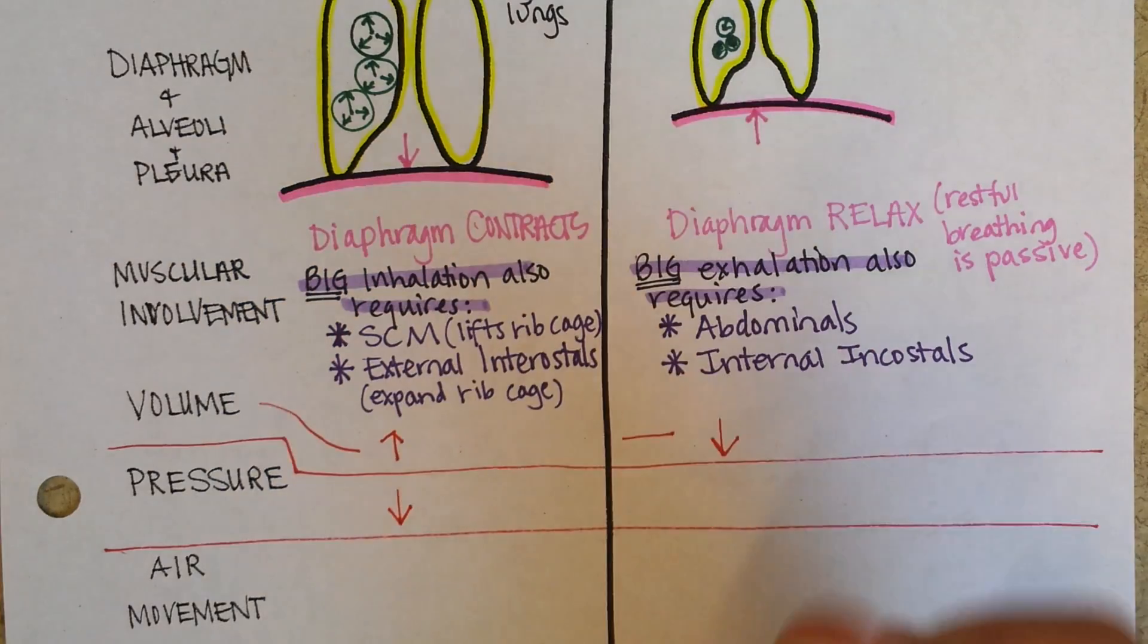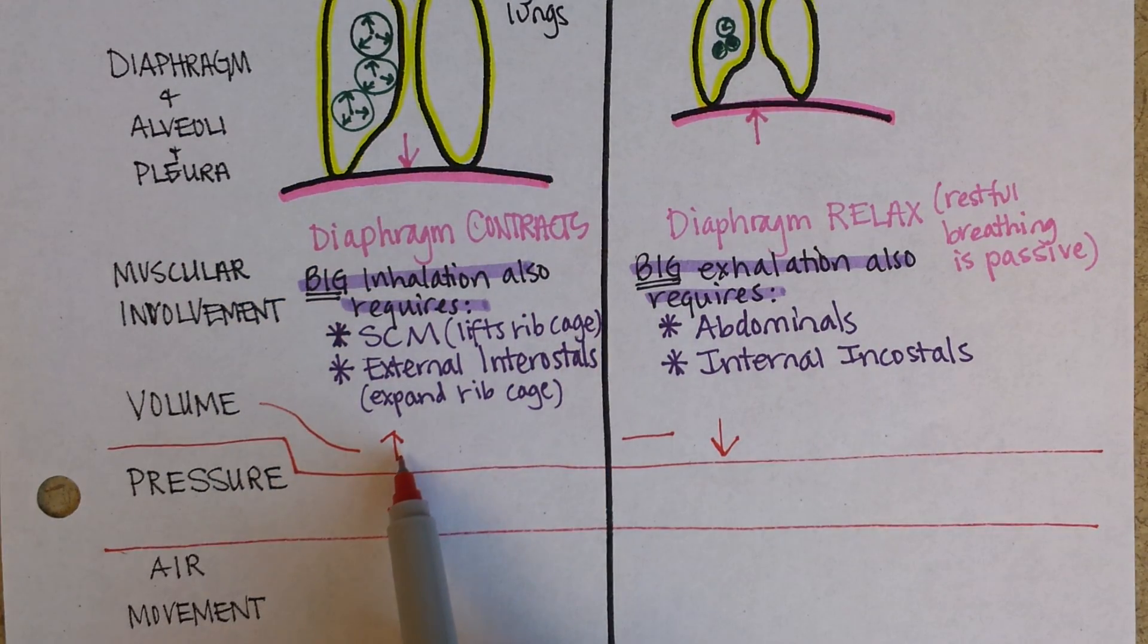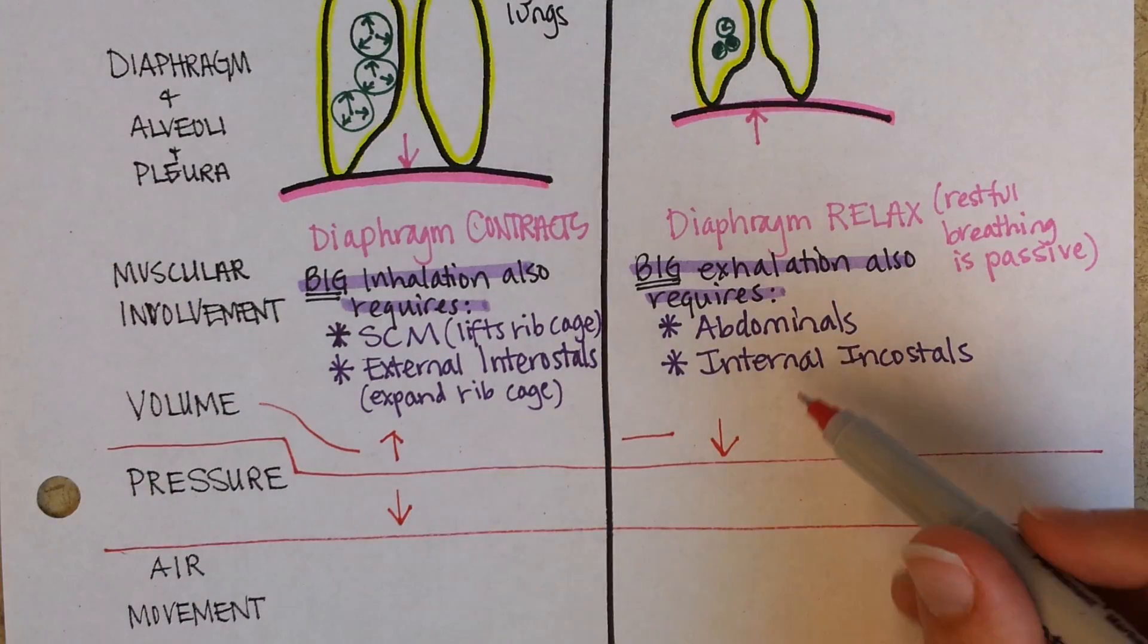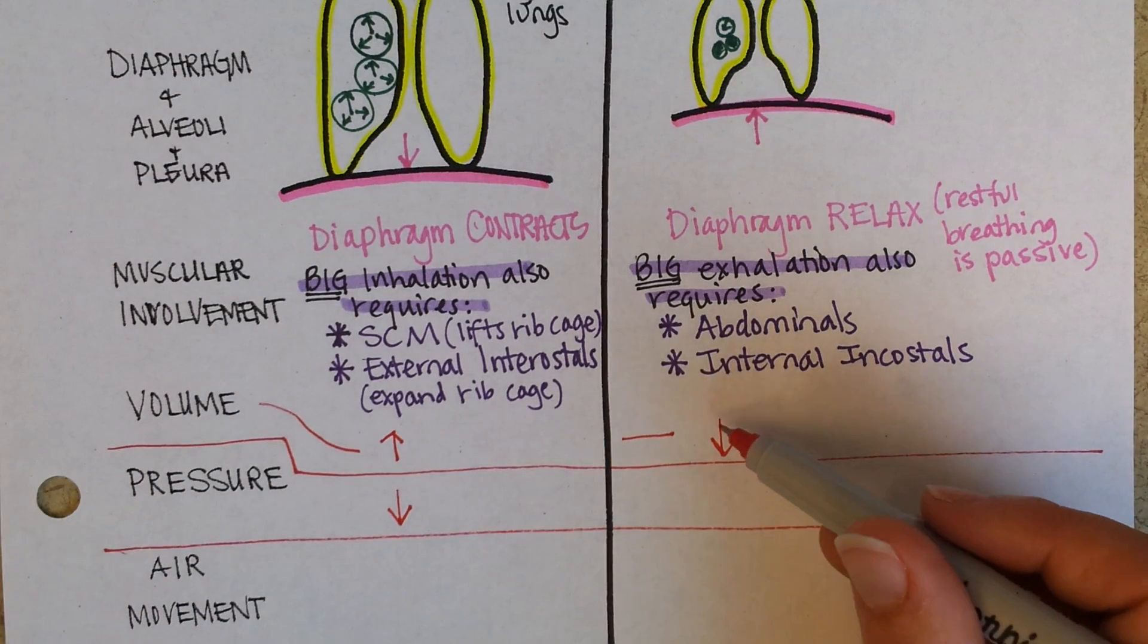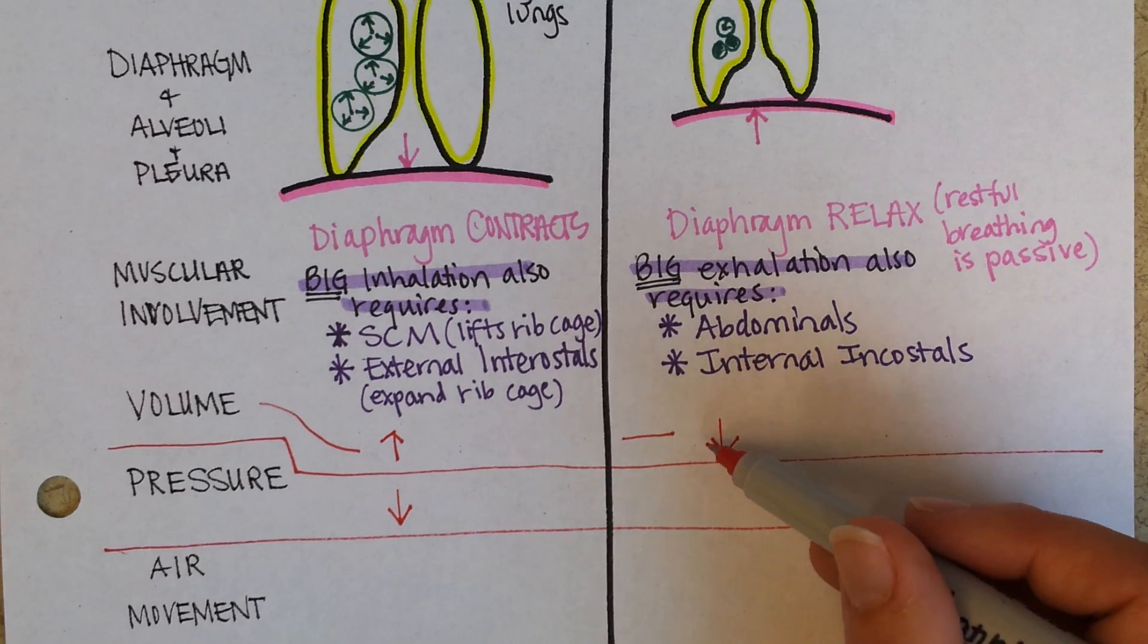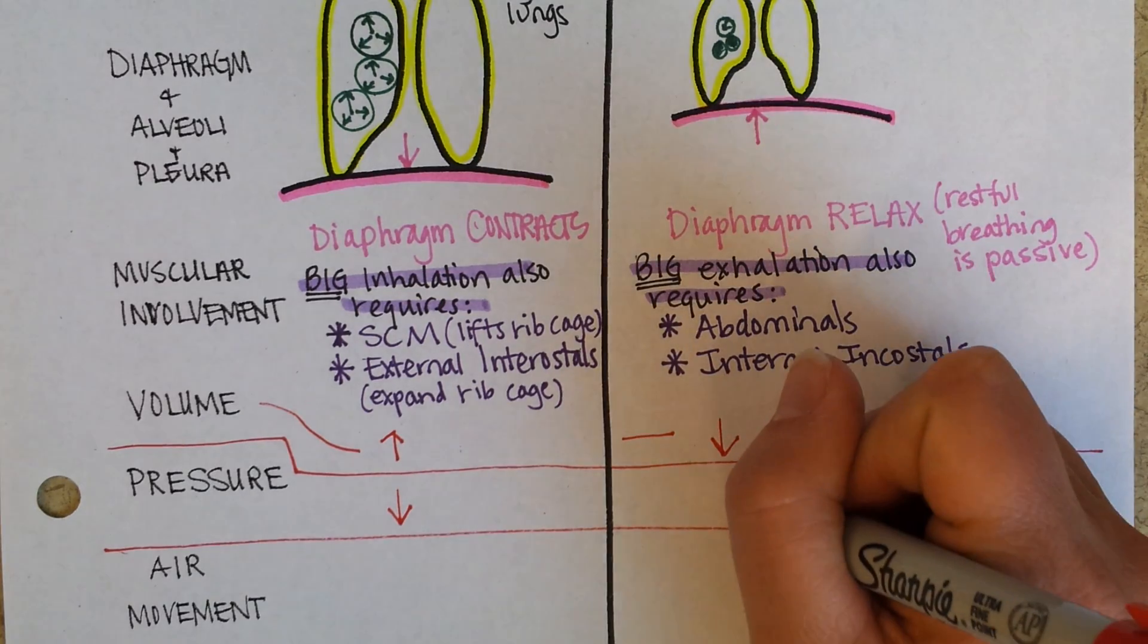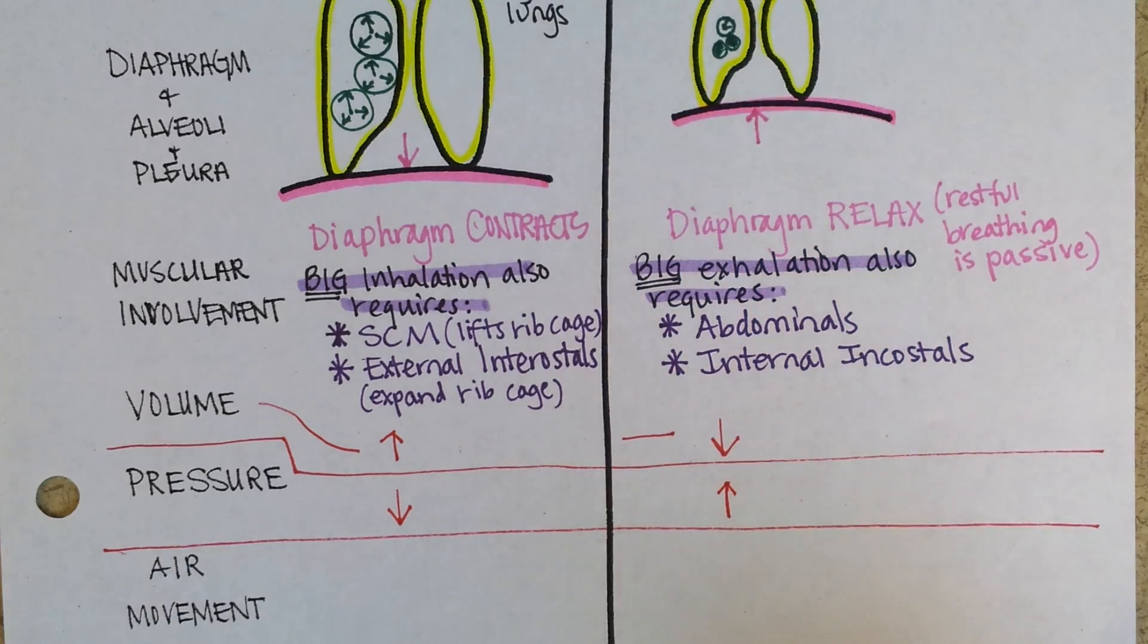So these are inversely related. If there's more room for the air, then the pressure for that air is going to go down. Conversely, when you exhale, the volume gets smaller and that increases the pressure inside of your lungs.